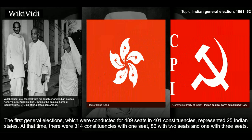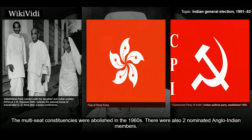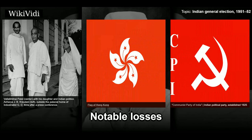Constituencies. The first general elections were conducted for 489 seats and 401 constituencies, representing 25 Indian states. At that time, there were 314 constituencies with one seat, 86 with two seats, and one with three seats. The multi-seat constituencies were abolished in the 1960s. There were also two nominated Anglo-Indian members.